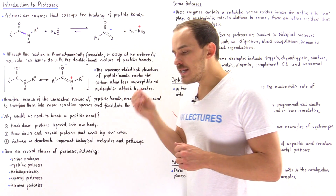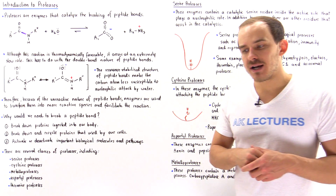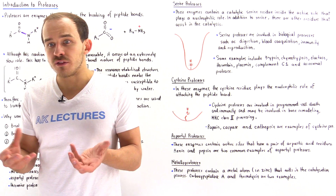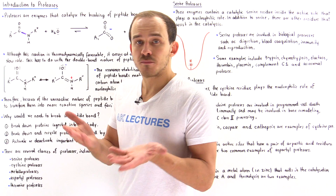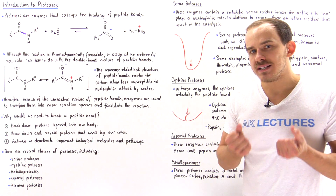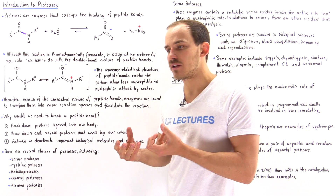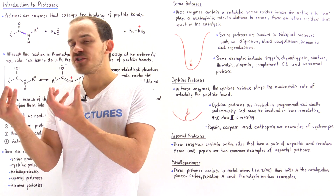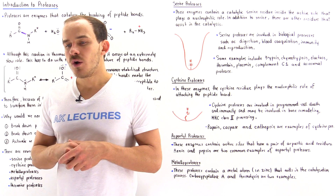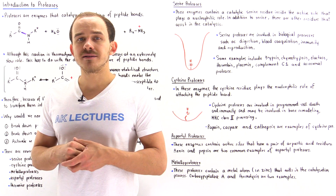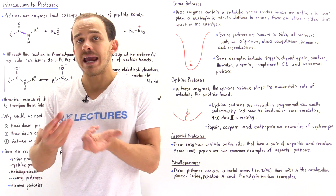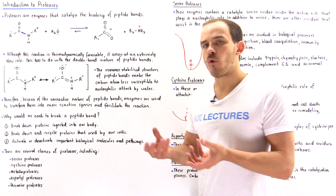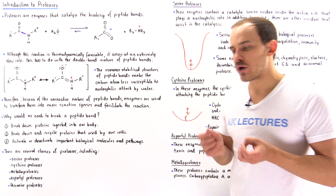Why would we need to actually break a peptide bond in the first place? Well, if we ingest a food particle that is a macromolecule — for instance, a protein — we have to be able to break down that food protein into its individual constituent amino acids, so that we can use them to form ATP molecules or to build brand new proteins and enzymes.